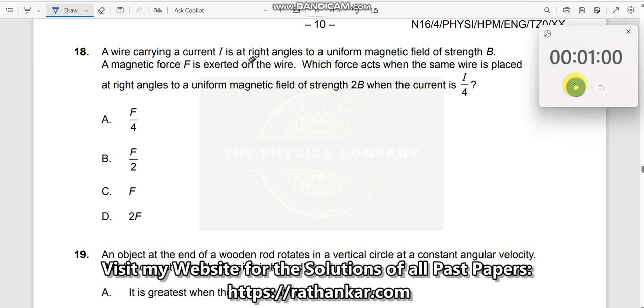The wire carrying a current i at right angles, which means theta equal to 90 is given to you, to uniform magnetic field B. The magnetic force F is exerted on the wire, which means F is equal to i, b, l, sin theta. Sin theta is sin 90, you get this answer.